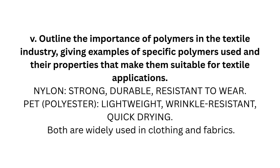Long answer Question 5: Outline the importance of polymers in the textile industry, giving examples of specific polymers used and their properties that make them suitable for textile applications. Nylon: strong, durable, resistant to wear. PET (polyester): lightweight, wrinkle resistant, quick drying. Both are widely used in clothing and fabrics.